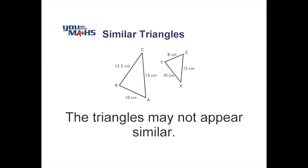Sometimes if we're asked to prove if triangles are similar, their first appearance is such that they don't actually look similar. So we need to orientate the triangles in a position so we can actually determine if they're similar or not.